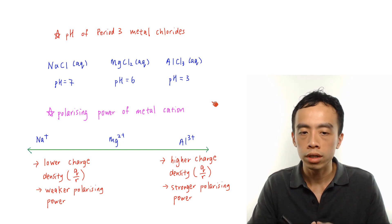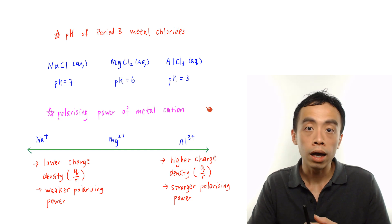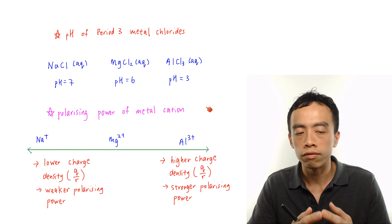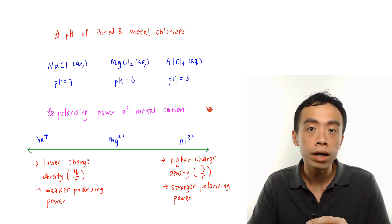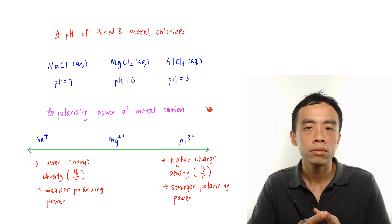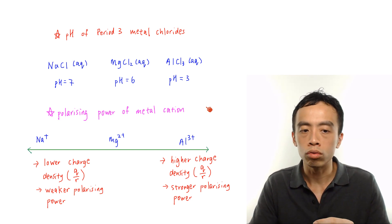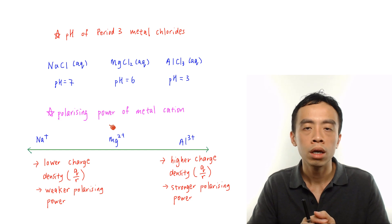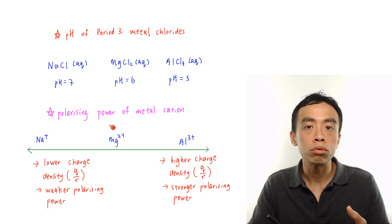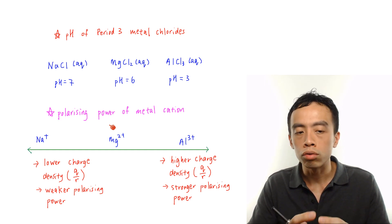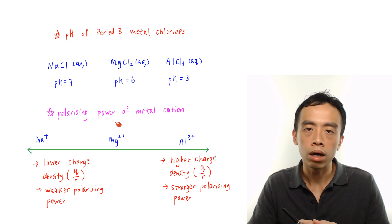Now polarizing power is a very important concept for metal cations. There are a lot of consequences involving polarizing power of metal cations. Things like ionic bond with covalent character is tied to polarizing power. Thermal decomposition of group 2 metal carbonate is also linked to polarizing power.